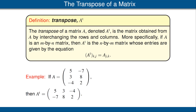And what was the second column of A, negative 7, 8, 2, becomes the second row of A transpose: negative 7, 8, 2. So A is a three-by-two matrix, but A transpose is a two-by-three matrix with two rows and three columns.